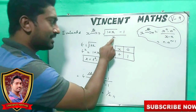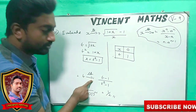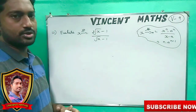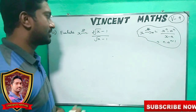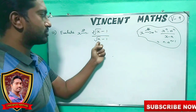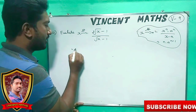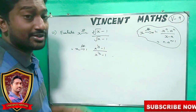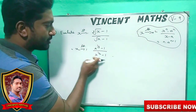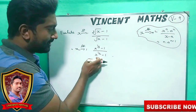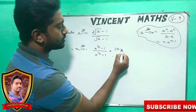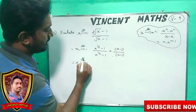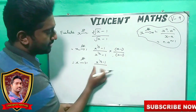Next problem: limit x goes to 1 of cube root of x minus 1 over square root of x minus 1. That is limit x→1 of x^(1/3) minus 1 divided by x^(1/2) minus 1. We use the formula, so we divide numerator and denominator by x minus 1.